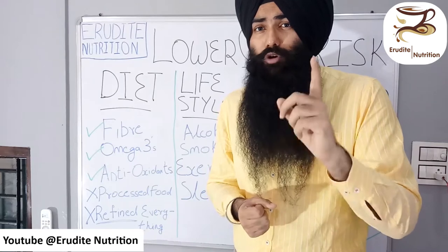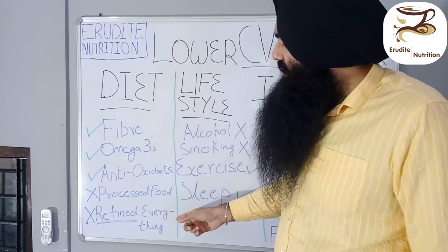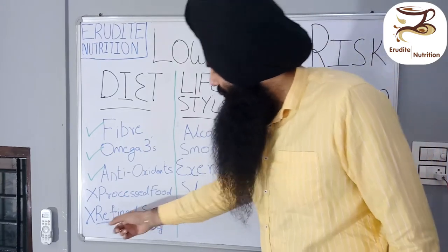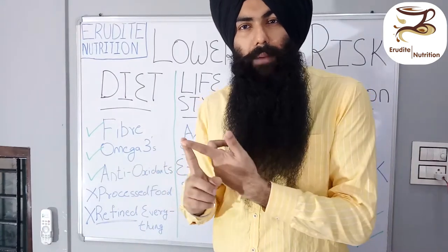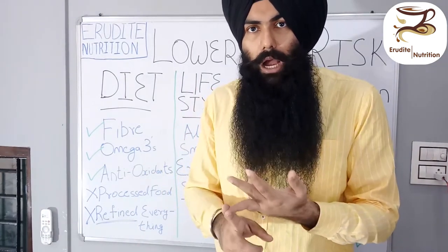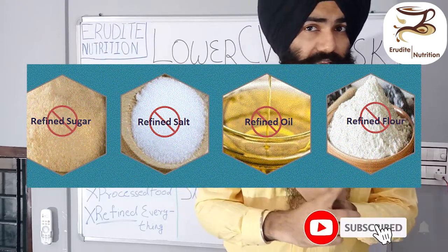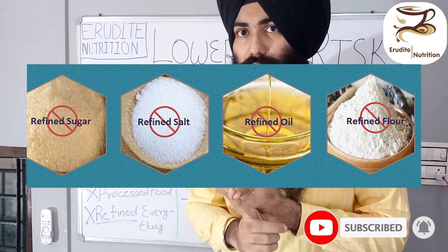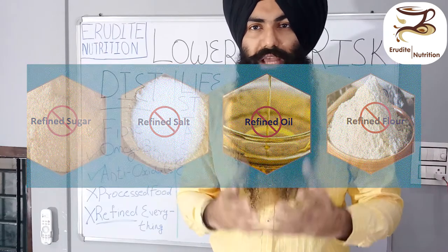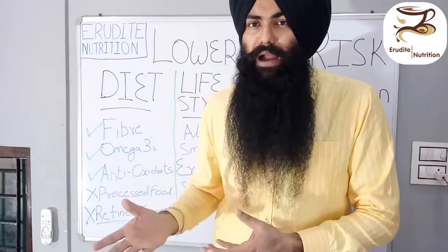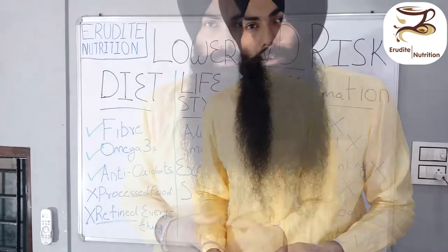The last item on this dietary list is refined everything — refined carbohydrates, refined grains, flour, refined sugar, refined oil, and refined salt. You have to stay away from all these refined, chemically processed, and ultra-modified food products. Make these changes in your diet as soon as possible.